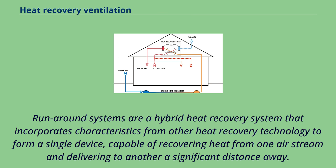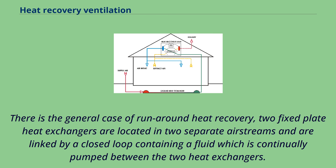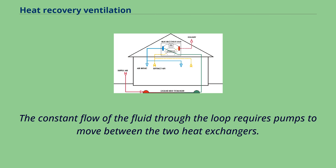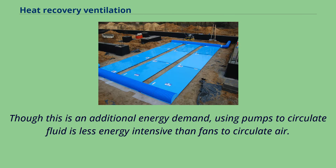Runaround systems are a hybrid heat recovery system that incorporates characteristics from other heat recovery technologies to form a single device capable of recovering heat from one air stream and delivering it to another a significant distance away. Two fixed plate heat exchangers are located in two separate airstreams and are linked by a closed loop containing a fluid continually pumped between them. The fluid is heated and cooled constantly as it flows around the loop, providing heat recovery. Though pumps create an additional energy demand, circulating fluid with pumps is less energy intensive than using fans to circulate air.